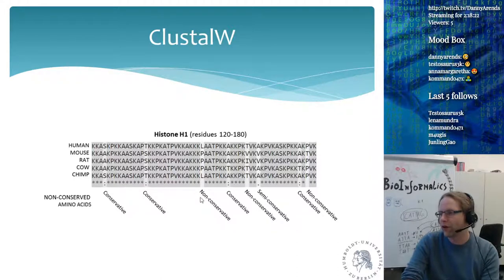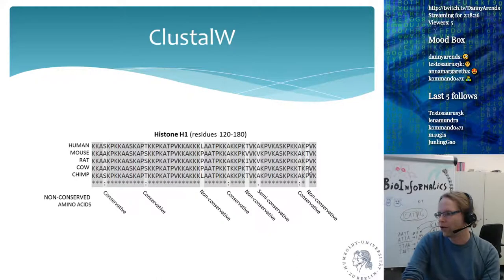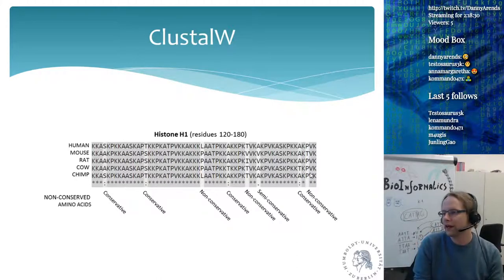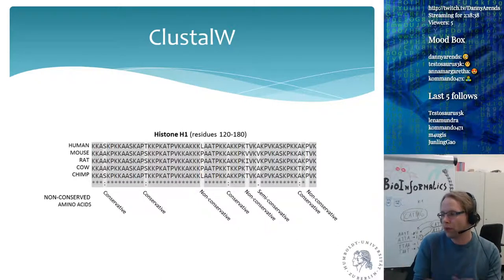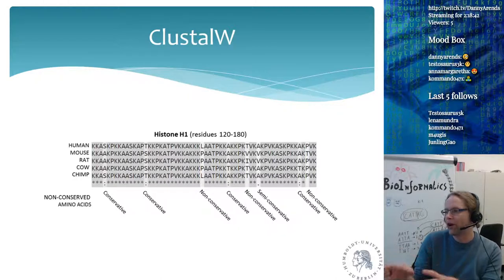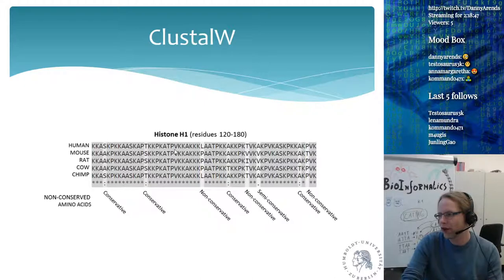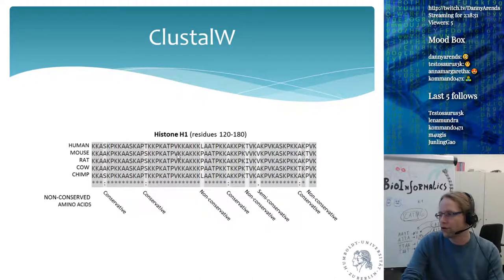Here you see leucine and phenylalanines, which are very different amino acids, so this part of the protein is not conserved. If you do large alignments of similar proteins across different species, you can figure out which part of the protein is probably the active site or where you can target a drug.